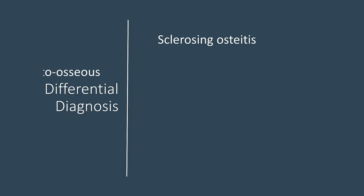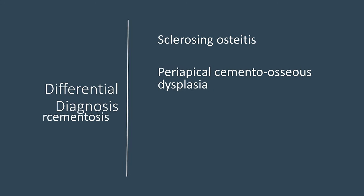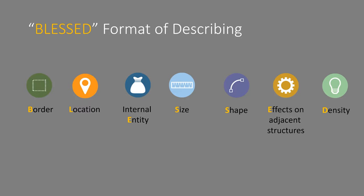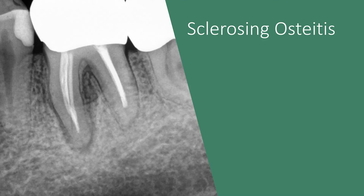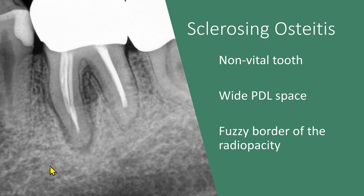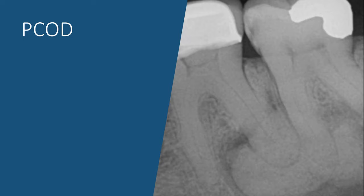The differential diagnosis of a dense bone island includes several conditions. First is sclerosing osteitis, which is seen with a non-vital tooth — the periodontal space is widened and the border of the radiopacity is fuzzy. The density is mixed, with some areas of radiolucency and some of radiopacity. In a dense bone island, by contrast, the radiopacity is homogeneous or uniform.